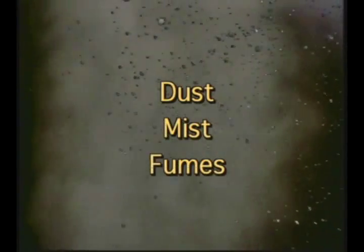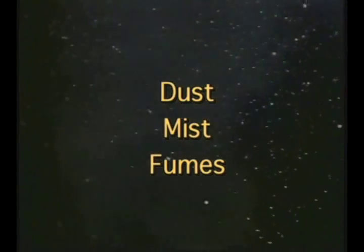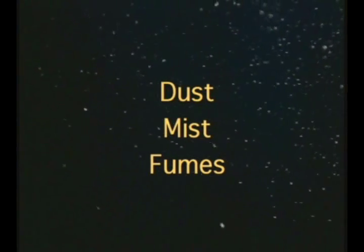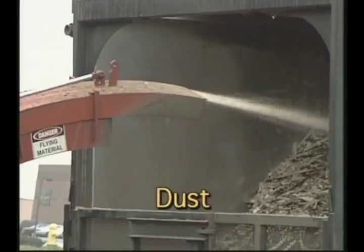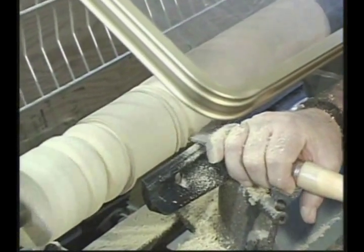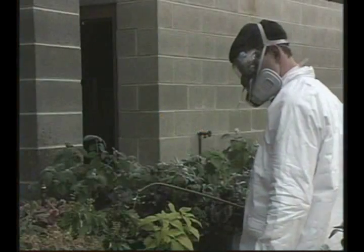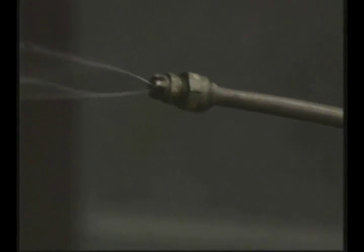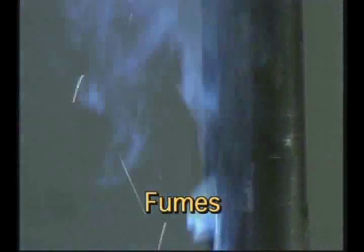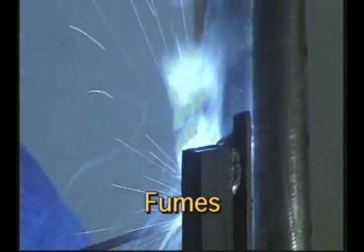Dust, mist and fumes are tiny particles that were once parts of a larger mass. Later, they were separated from their parent substances and became airborne. Dust is produced when solid objects are broken down into fine particles — you can see this in woodworking, crushing, and grinding processes. Mist is made up of droplets suspended in the air, created when pressurized liquids are sprayed. Fumes are composed of solid particles formed when metals or plastics are heated, as in welding and furnace operations.